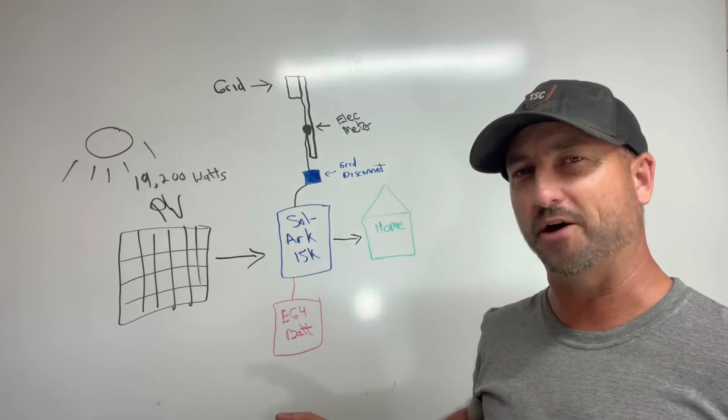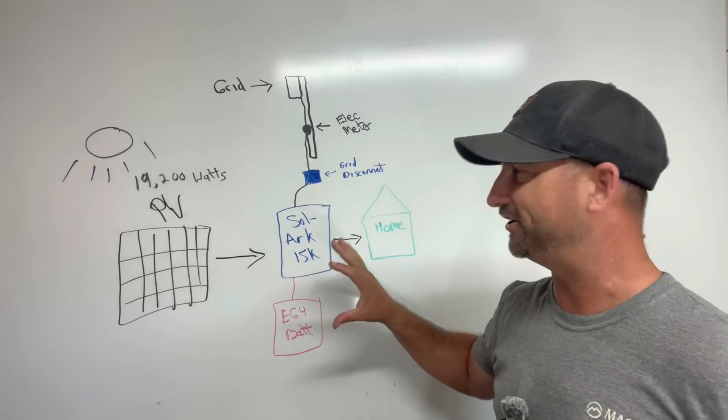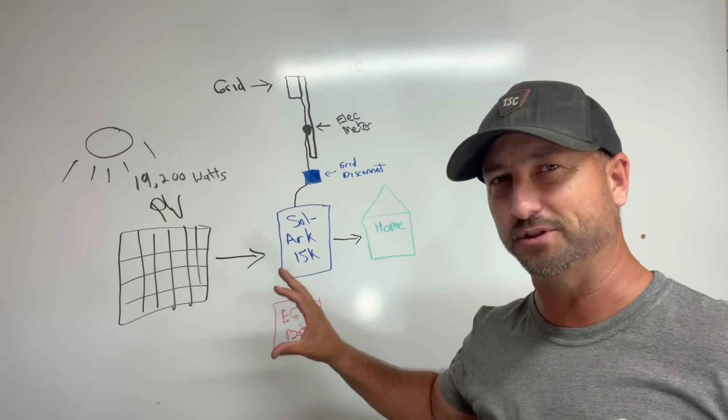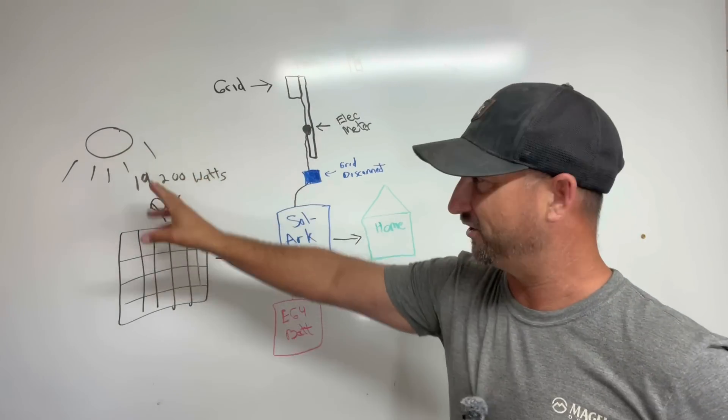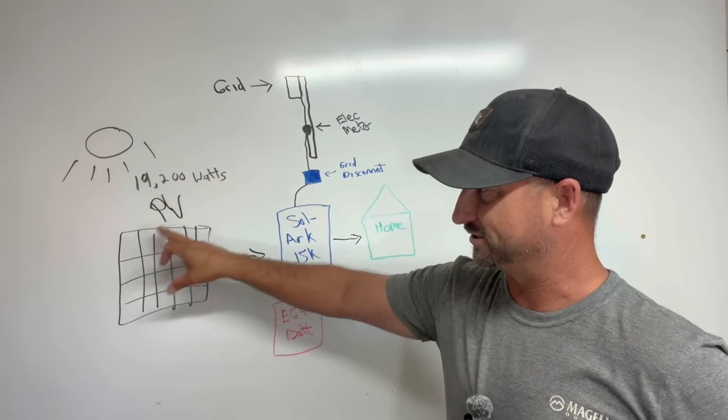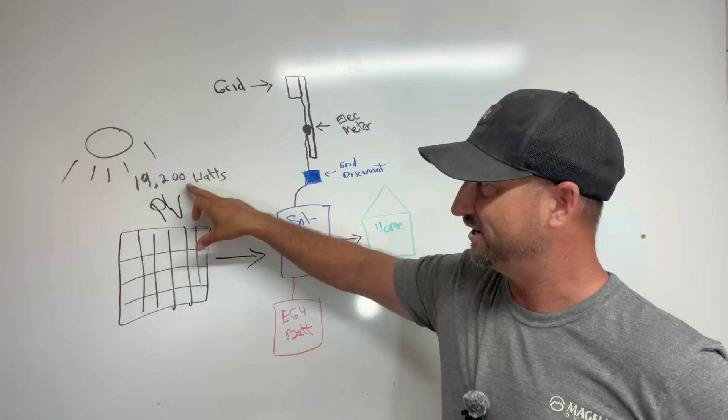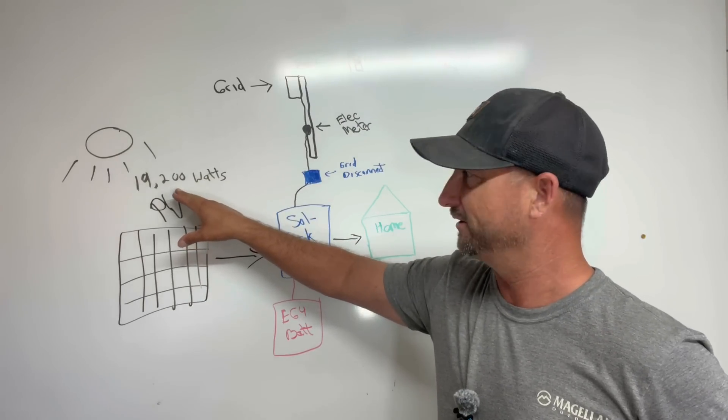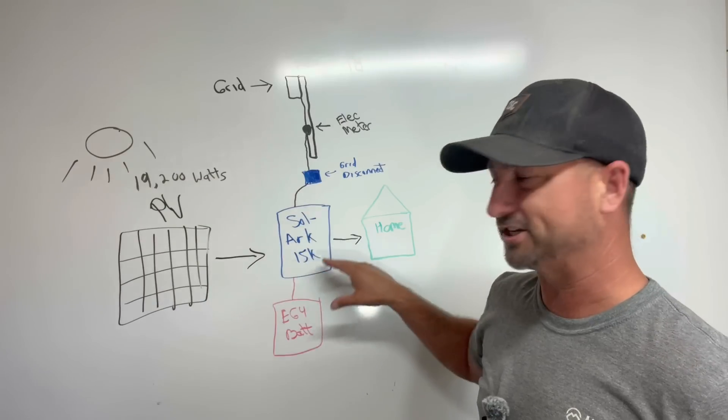Here's just a quick rundown of how my system works. I drew it out here on this whiteboard. Every solar system is pretty similar to this, but in a nutshell you've got the sun right here brings in power to the solar panels. My solar panels I have 19,200 watts of them, so I have a big array.